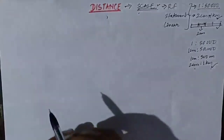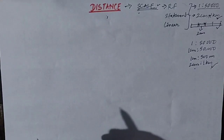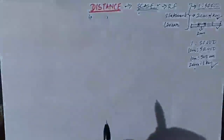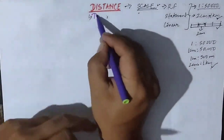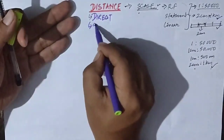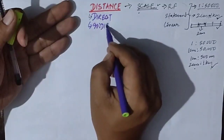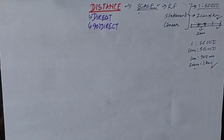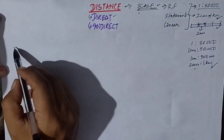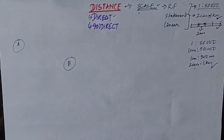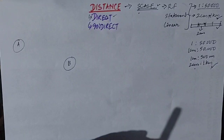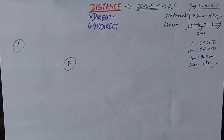Now I will teach you how to find out the distance. There are generally two types of questions asked about distance: one is direct distance and another is indirect distance. Let's begin with the direct distance — this is very simple. For example, take a station A and a station B, two settlements, and the question asks you to measure the direct distance between the two places.